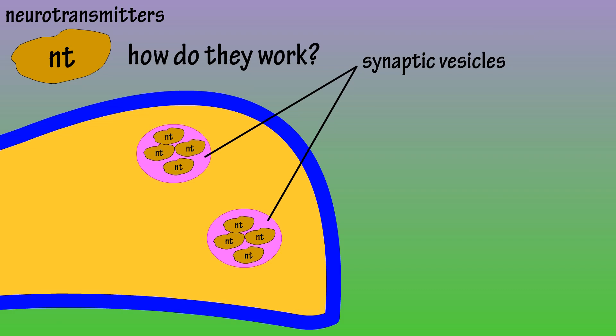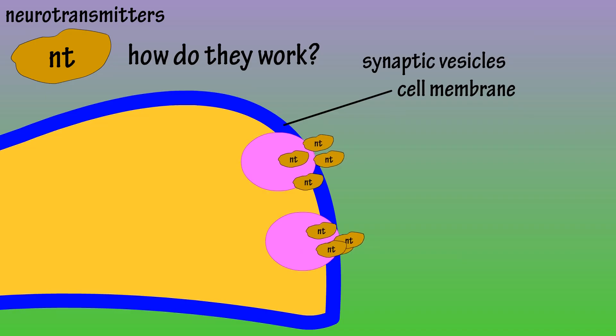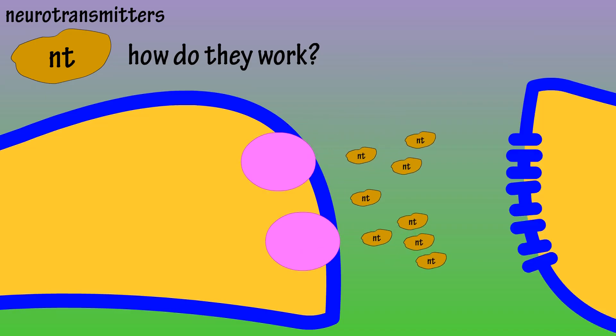These synaptic vesicles fuse with the cell membrane and release the neurotransmitters, which cross a fluid-filled gap called the synaptic cleft.